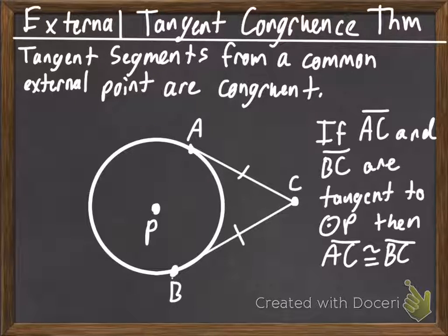And we see that both the segment going from B and A share the point C. So, if AC and BC are tangent to circle P, then AC is congruent to BC.